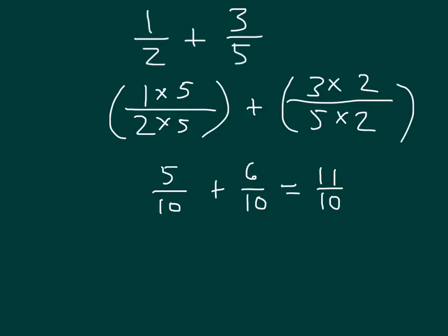Now, 11 tenths is not in simplest form. We should be thinking about 11 divided by 10. 10 goes into 11 one whole time. And we have 1 tenths left over. The other way to look at that is that 11 tenths does equal 10 tenths plus 1 tenths, which is 1 plus 1 tenths, which would give us 1 and 1 tenths. So for our problem, 1 half plus 3 fifths, it does equal 1 and 1 tenths.